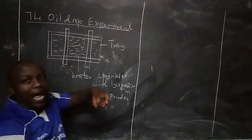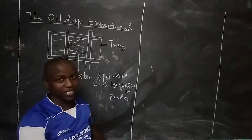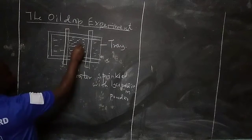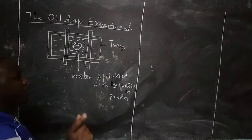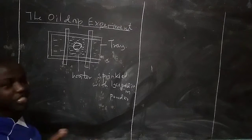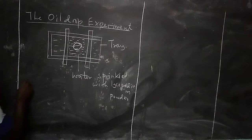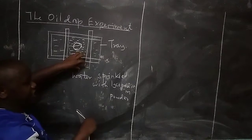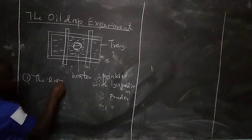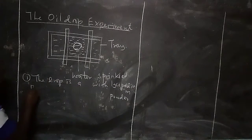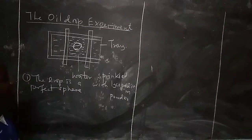Then we get a drop of oil, which of course contains molecules, and we drop it onto the surface. The drop is always spherical. One of the assumptions made for this experiment is that the drop is a perfect sphere originally.